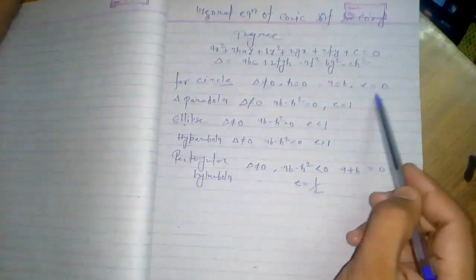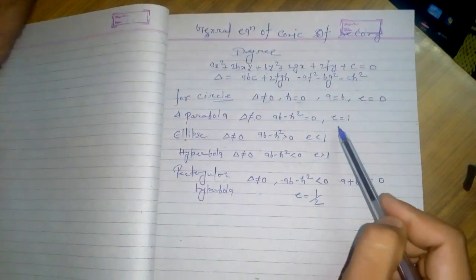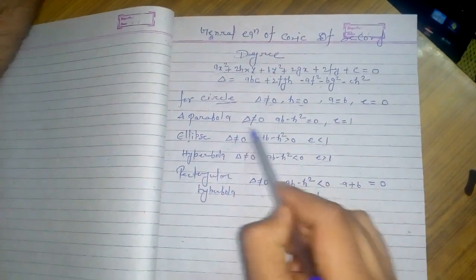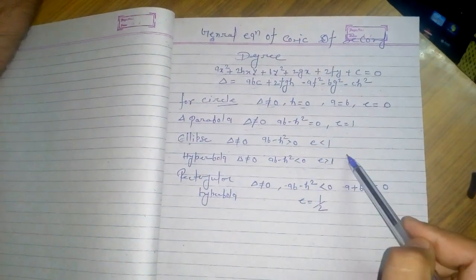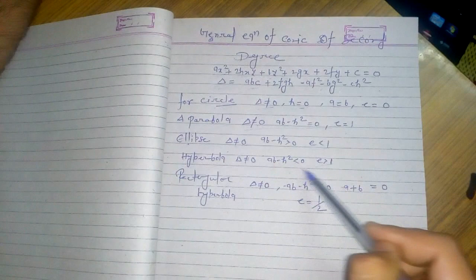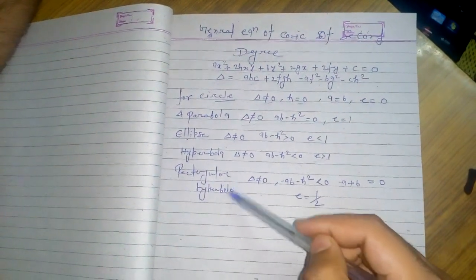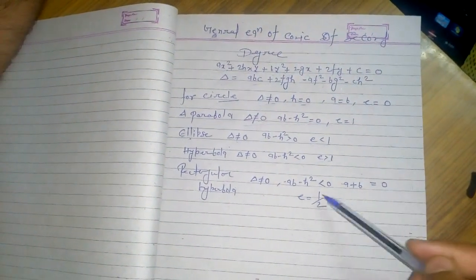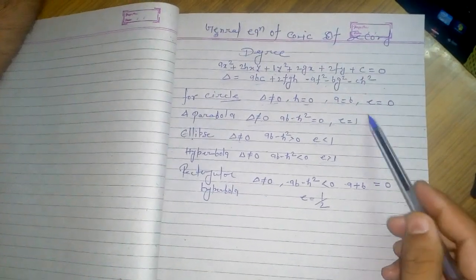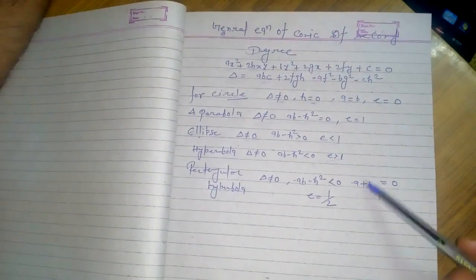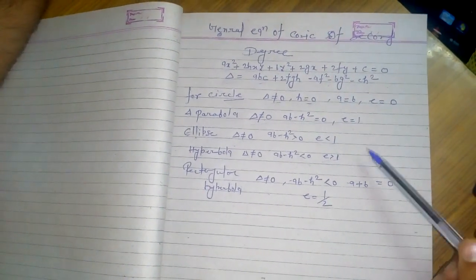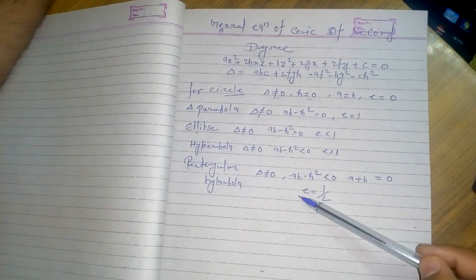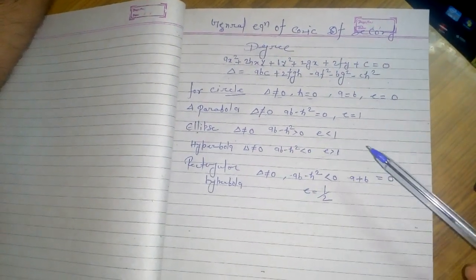For a parabola there are some specific values, for an ellipse there are different values, for a hyperbola there are different values, and for a rectangular hyperbola there are different conditions. We need to follow and satisfy all these conditions, then only we can say whether the conic is a parabola, ellipse, hyperbola, or rectangular hyperbola.